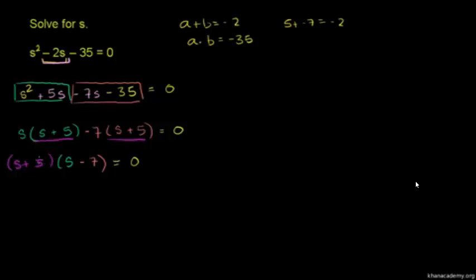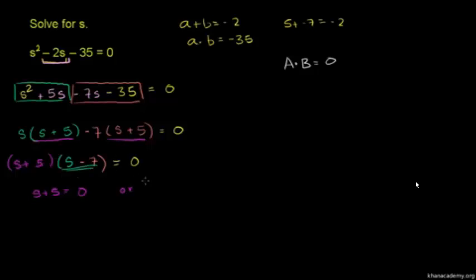Now that we've factored it, we just have to think about what happens when you take the product of two numbers. s plus 5 is a number, and s minus 7 is another number, and we're saying their product equals 0. If a times b equals 0, then at least one of them has to be equal to 0. So either s plus 5 is equal to 0, or s minus 7 is equal to 0.